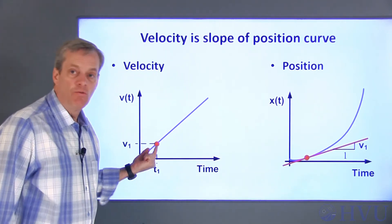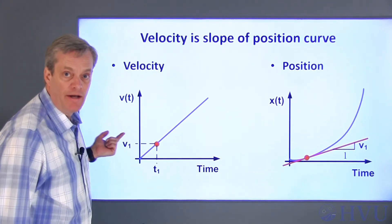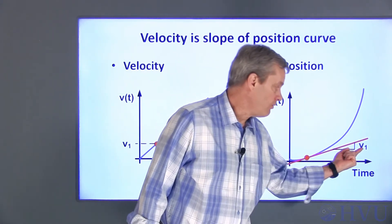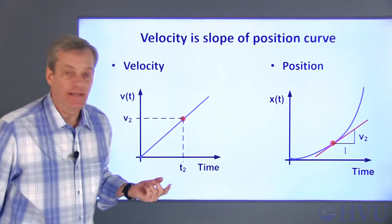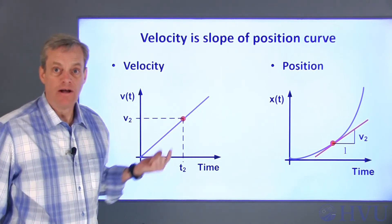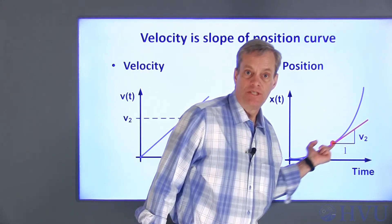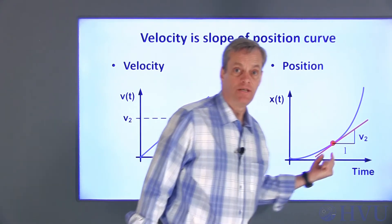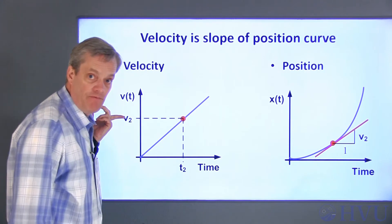So, at this time t1, the velocity is v1. That means that the slope of the position curve at time t1 will be v1. At a later time, t2, the velocity is higher and the rate of change of the position curve will also be higher. The slope of the curve at time t2 is the value of the velocity v2 at that time.